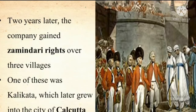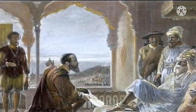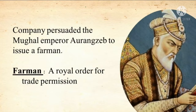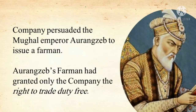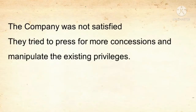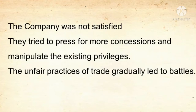One of these villages was Kalikata, which later grew into the city of Calcutta. The Mughal Emperor Aurangzeb issued an order granting the company the right to trade duty-free. The company persuaded the Mughal Emperor Aurangzeb to issue a Farman — a royal order for trade permission. Aurangzeb's Farman had guaranteed only the company the right to trade duty-free, meaning trade without paying taxes. But the company was not satisfied; they tried to press for more concessions and manipulate the existing privileges. The unfair practices of trade gradually led to battles.